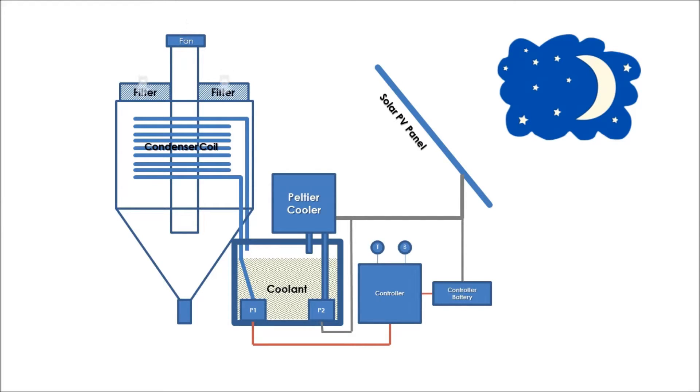This condenser coil is enclosed inside a vessel, where air is pulled across the condenser coil to draw moisture out of the air. This water then falls as droplets at the bottom of the vessel.